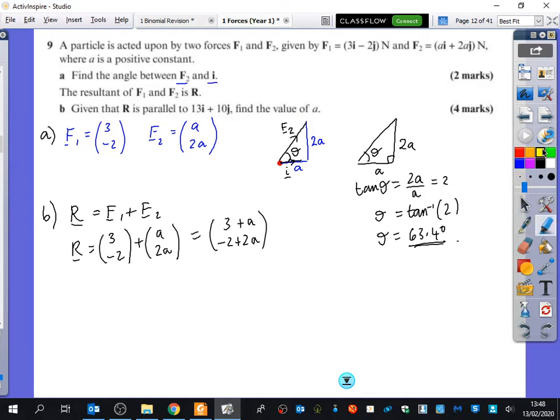But there's something really, really important, and it's this sentence here, which says R is parallel to 13, 10. What you might be tempted to do is say, oh, well, if it's parallel to 13, 10, I'm just going to make them equal to each other. I'm just going to say that it's equal to 13, 10. But it doesn't say that. It doesn't say that R is 13, 10. It says it is parallel to it.